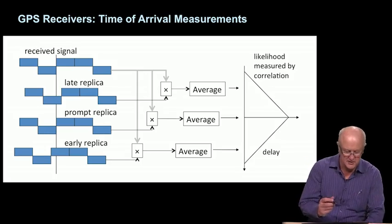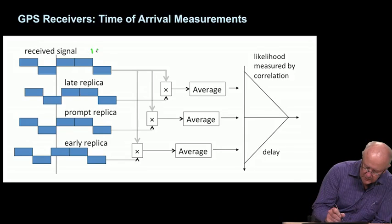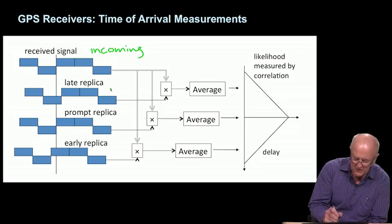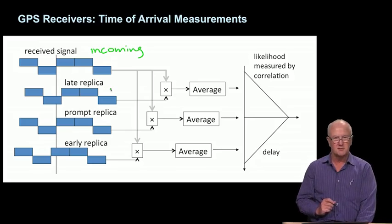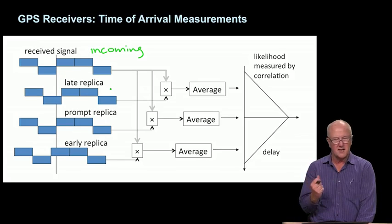The correlation operation is associated with the incoming signal, which we could call received or incoming, and the replicas are internal to the receiver.